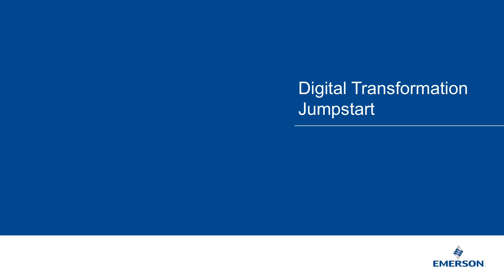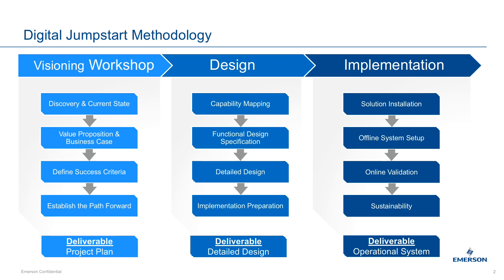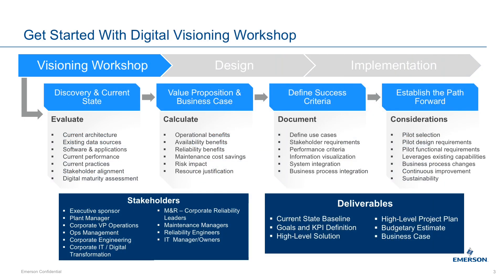We've created an approach called Digital Jumpstart. It has a couple of components — one is we start with a Digital Visioning Workshop. The overall objectives are to help you create a vision of where your organization wants to go with its digital strategy, whether that's at a plant level, enterprise level, or the whole corporation. We develop that vision and strategy while also defining things like the value proposition for deploying more digital technology, how to blend the technology with people and business process, and what the success criteria are for the deployment of digital within the organization.